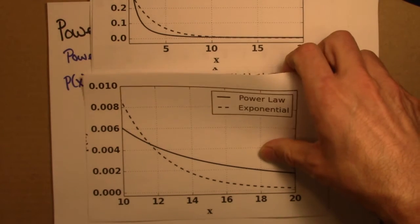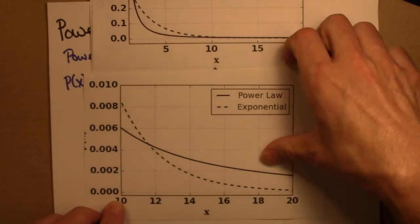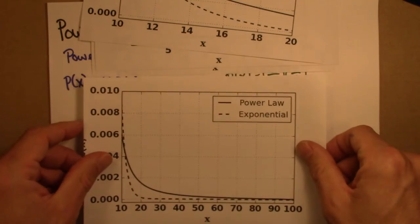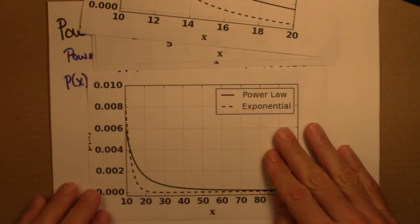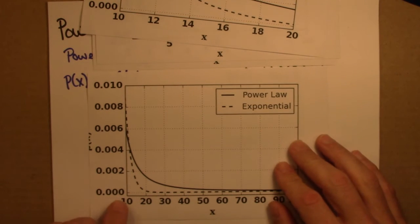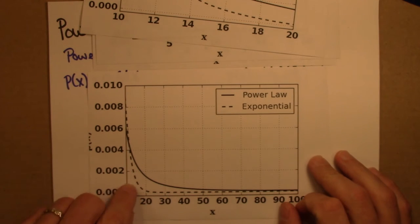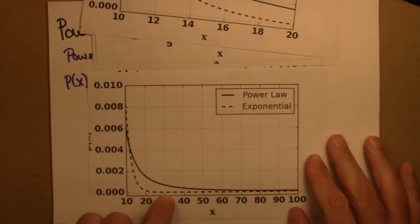Alright, so now let's stretch our view out, not from 10 to 20, but from 10 to 100. And now we'll start to see some interesting behavior. Now we're starting to see what's called the long tail. So from 10 out to 100, the exponential is indistinguishable from 0 by the time we get out to 30. But the power law is still decaying quite slowly.